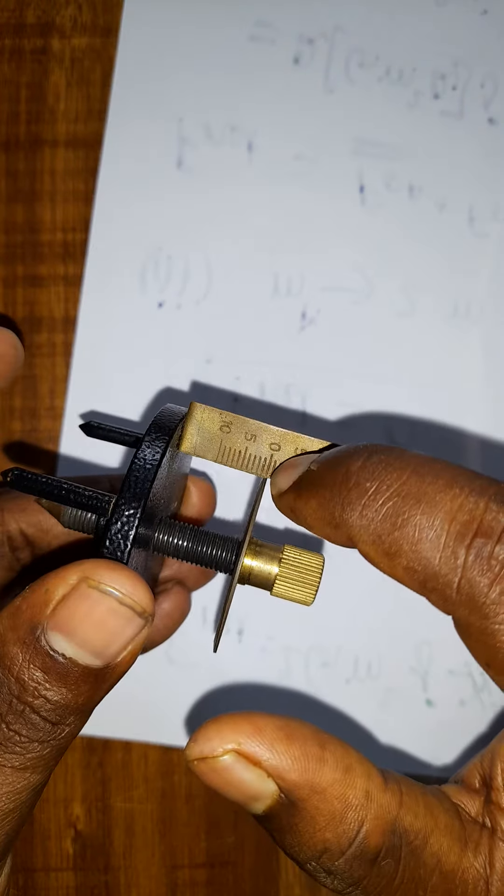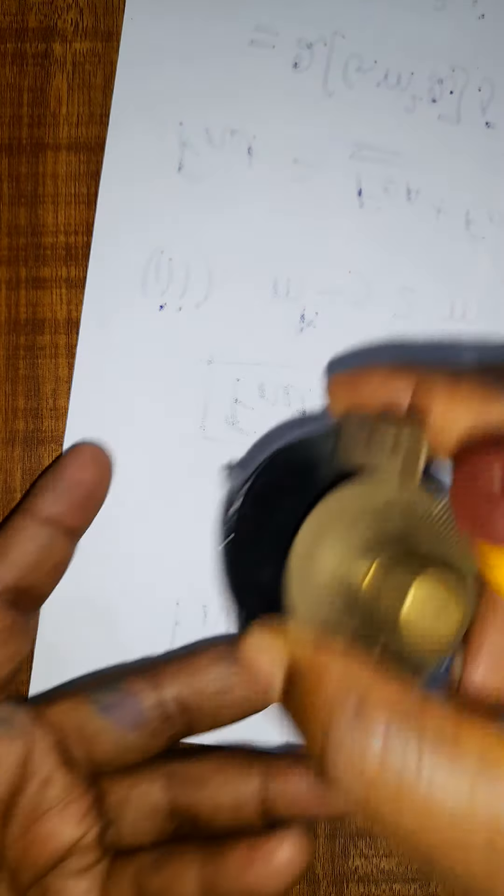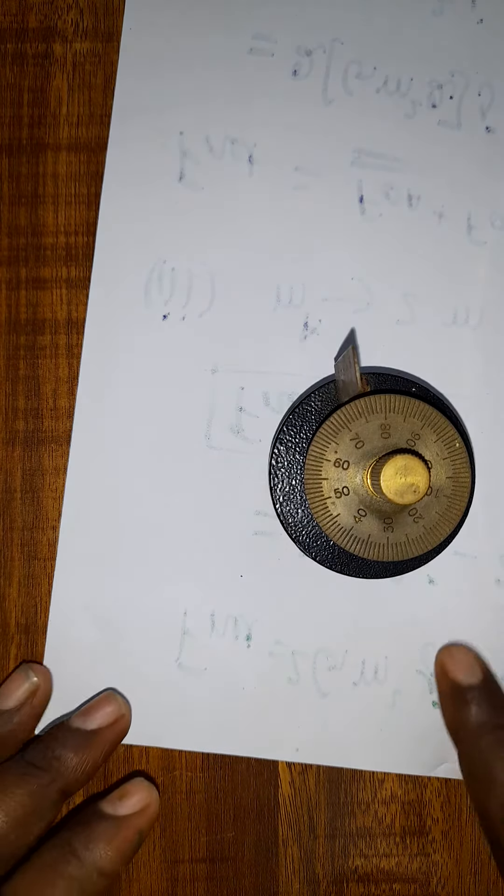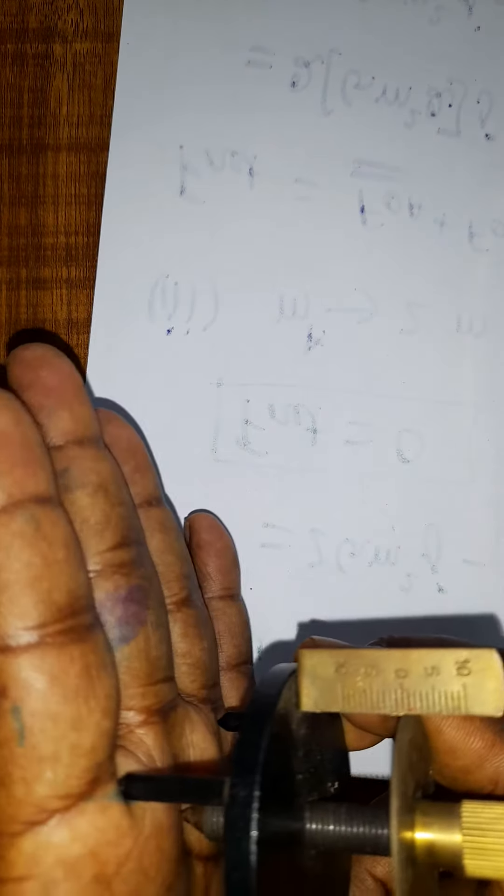Circular scale 0 and main scale 0, if coincident means, your instrument will be correct. You can place on the glass slab or on the lens. The surface will be in a, all the pins will be in a straight.